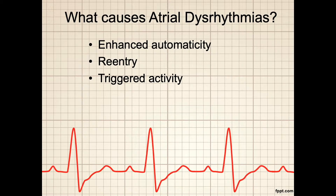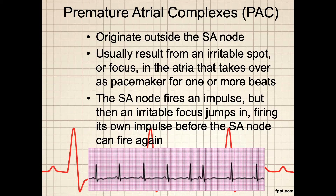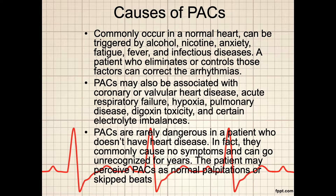First up are premature atrial complexes, or PACs. These originate outside the SA node and usually result from an irritable spot or focus in the atria that takes over as pacemaker for one or more beats. The SA node fires an impulse, but then an irritable focus jumps in, firing its own impulse before the SA node can fire again. PACs commonly occur with normal heart rate and rhythms and can be triggered by alcohol, nicotine, anxiety, fatigue, fever, and infectious disease. A patient who eliminates or controls those factors can also correct this arrhythmia.